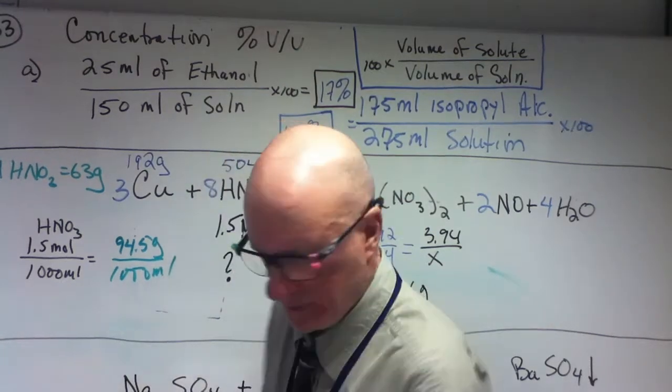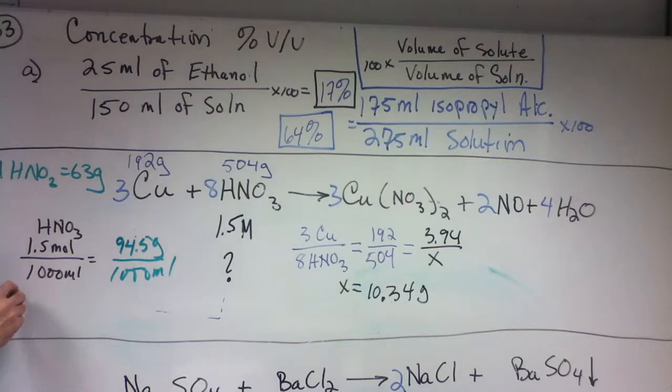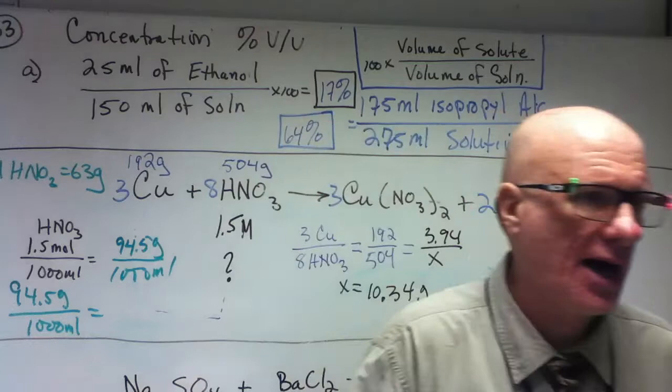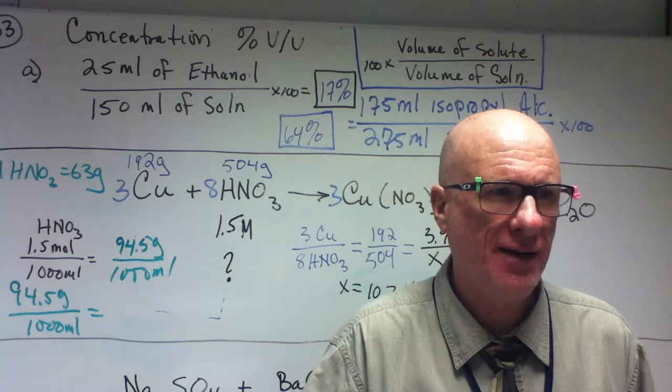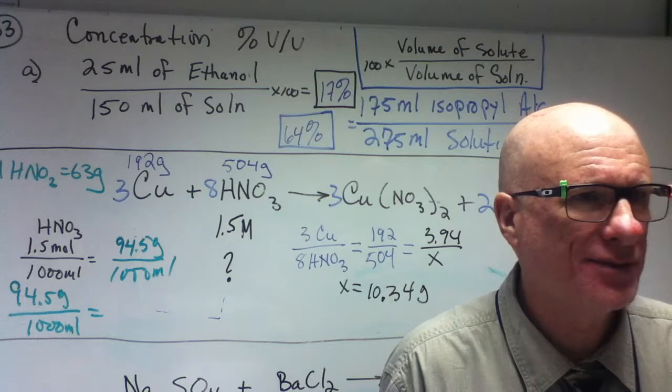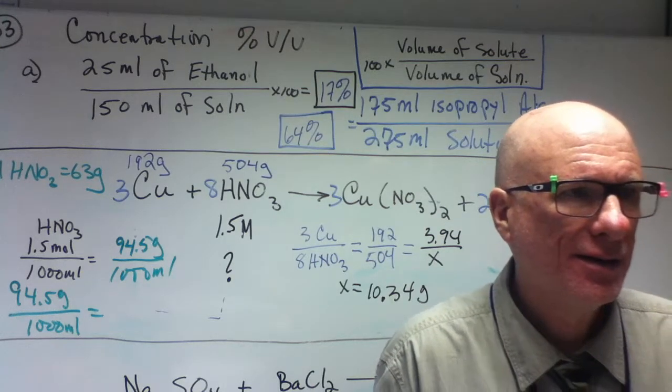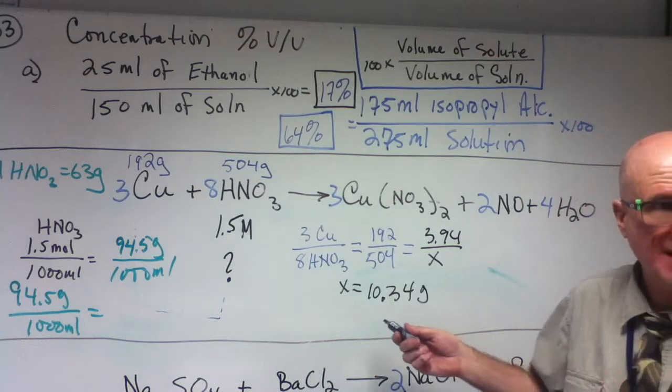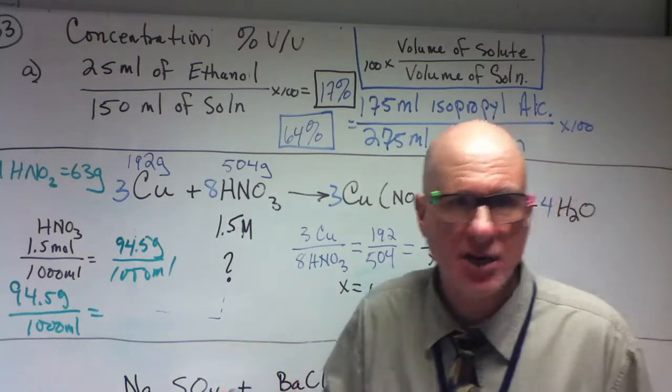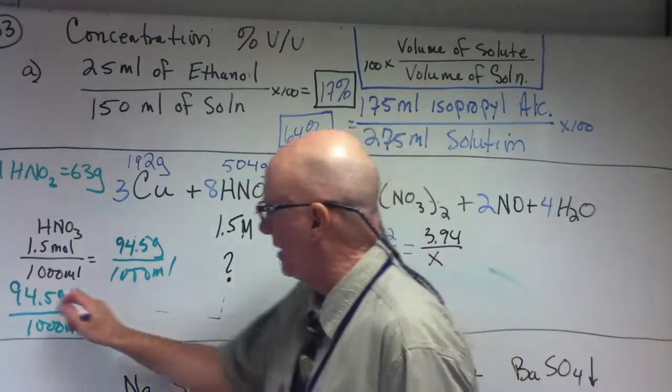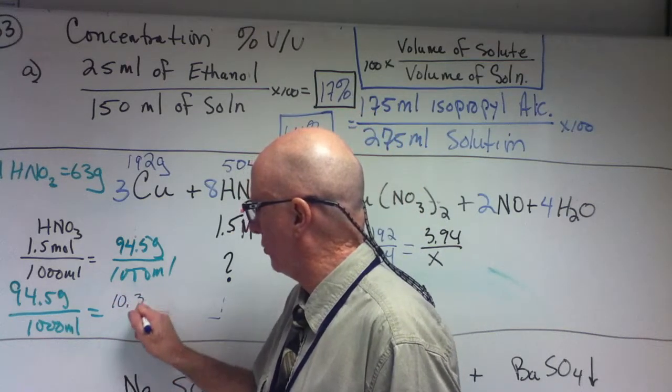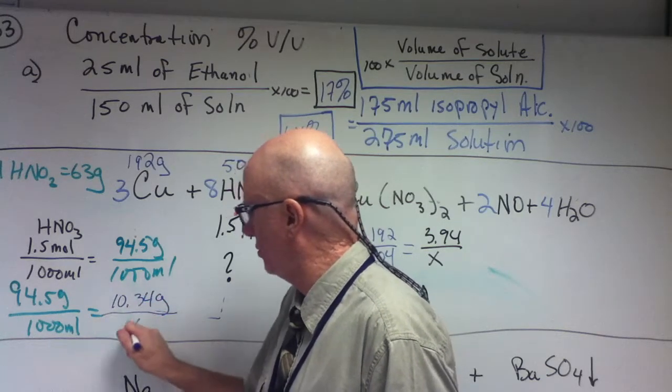So therefore this is what I have. I have 94.5 grams over 1000 milliliters, right? Now, so there's 94.5 grams per 1000 milliliters. But how many grams do I need? I don't need 94.5 grams. What do I need? 10.34, right? So the question is this, another proportional relationship. 94.5 is to 1000 as 10.34 is to X, correct?